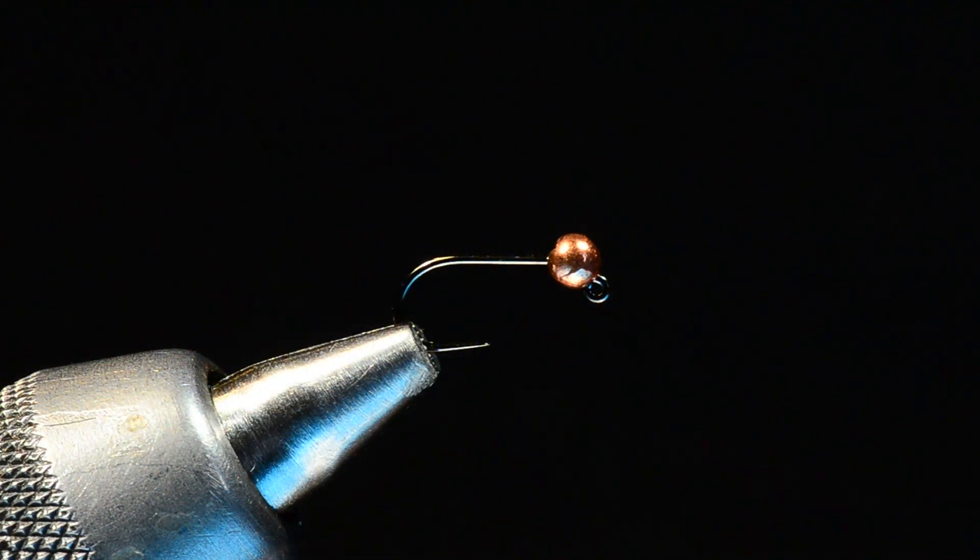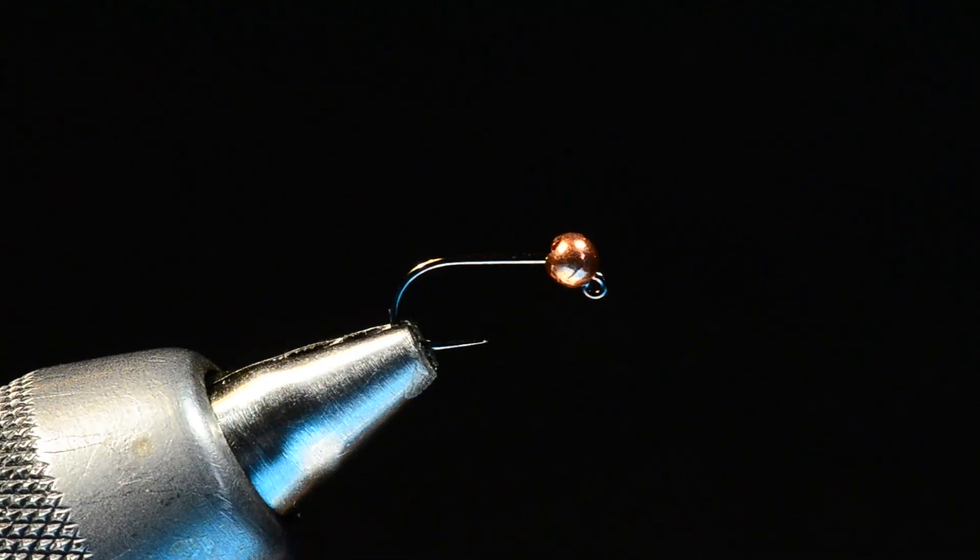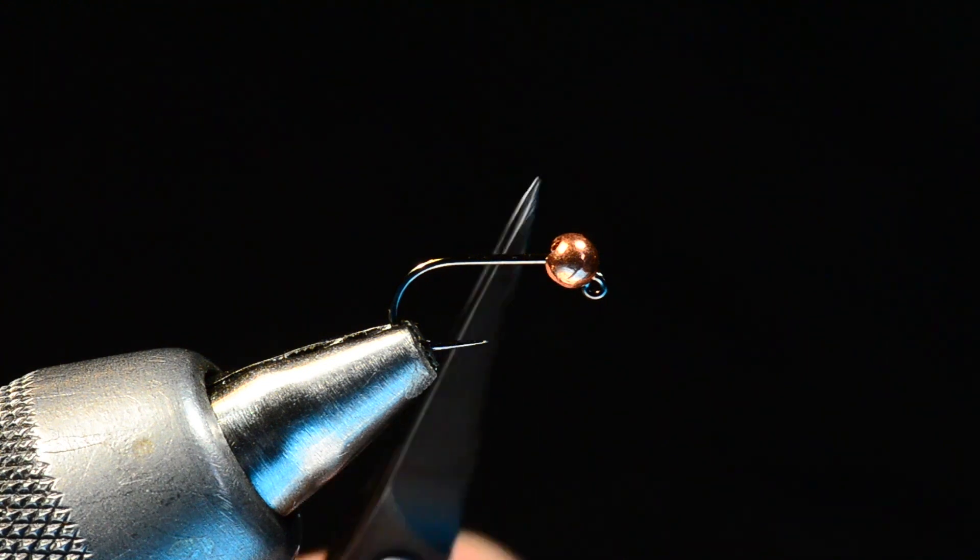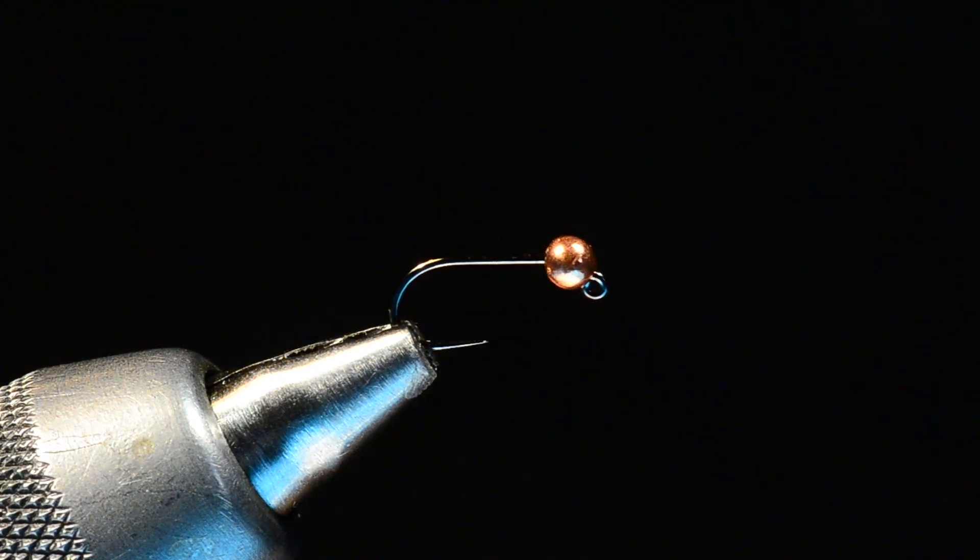Here we go with Devin Olson's Blowtorch Nymph. What I've got here in the vise is a Hanak C400 jig hook. It's a 60 degree jig hook, barbless obviously, and I've got a three millimeter copper tungsten bead slid on there. That's a slotted bead.